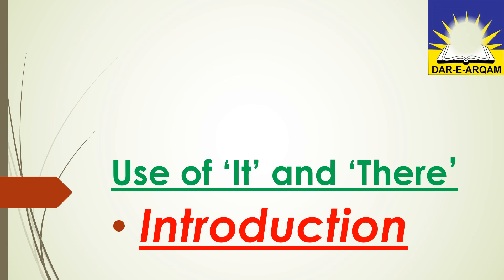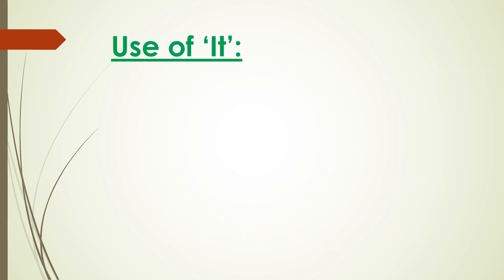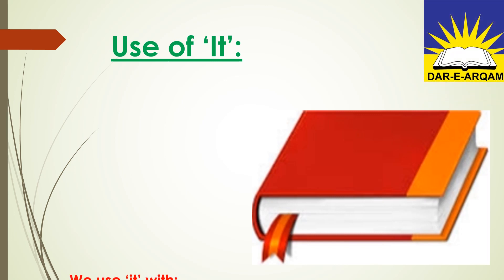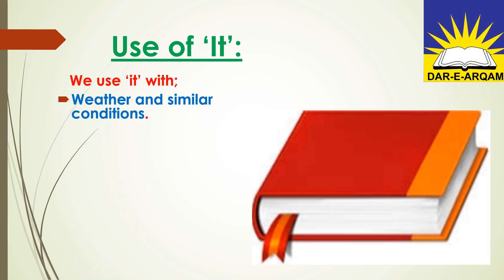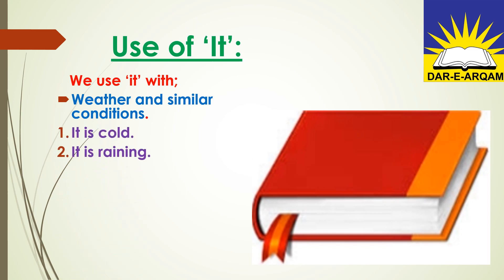Use of 'it' and 'there.' First of all, use of 'it.' We use 'it' with weather and similar conditions. When there is mention of something related to weather or similar conditions, we shall use 'it.' Here are three examples: It is cold — cold is a weather, so we use 'it.' It is raining — raining is a weather, so we use 'it.' It is getting boring — this is some condition, so we use 'it.'